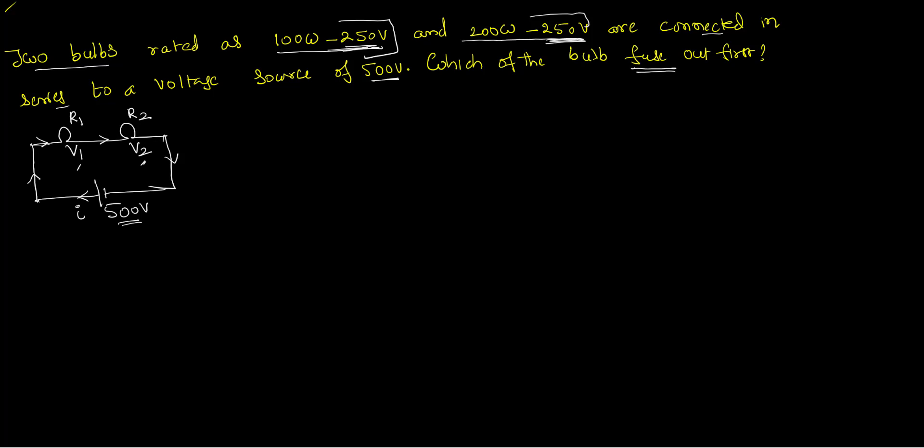How can we calculate that? First of all, I have to calculate the resistance of that. How can I calculate the resistance? Based on the formula of the power. Power designated is voltage designated squared by resistance. So for bulb 1, power is given as 100 watts. Voltage is given as 250 volts. V square 250 and 250 by resistance R1.